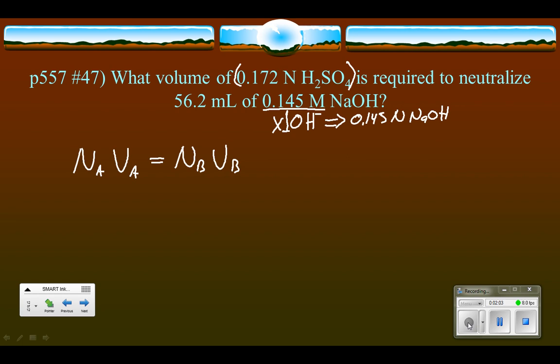In this one, we are trying to find the volume of the acid. So let's do the algebra here. The volume of the acid will therefore be the normality of the base times the volume of the base divided by the normality of the acid.